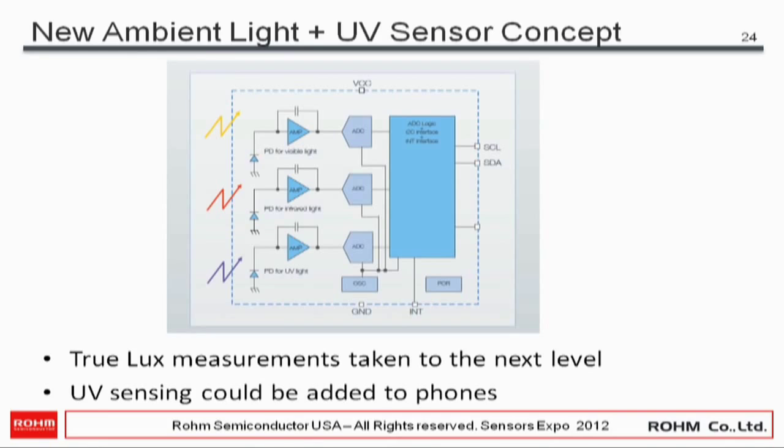A new concept is the ambient light sensor plus UV sensor, where a third UV sensor is added alongside the two photodiodes. This takes the two-channel lux measurement to the next level, and UV sensing can be added to phones at very small incremental cost.